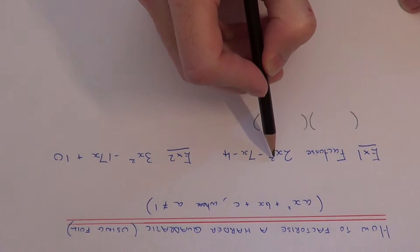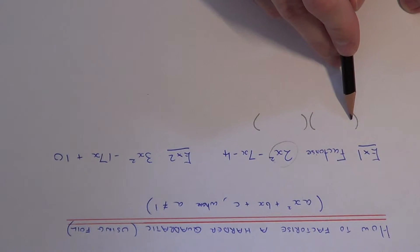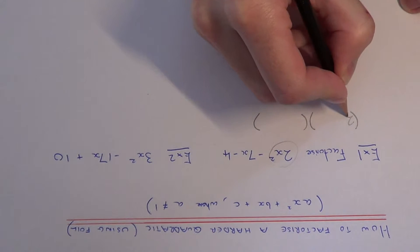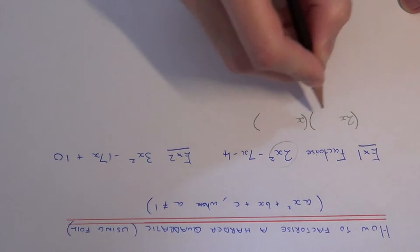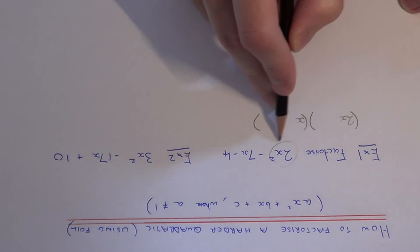Now since our first term is 2x squared, the values we need to put here and here will be 2x and x, because 2x times x is 2x squared. This gives us the first term.